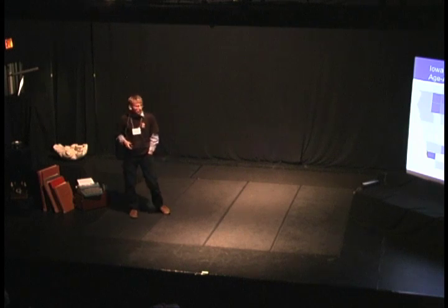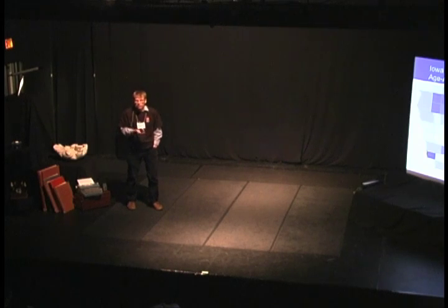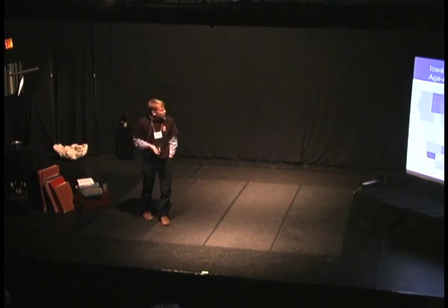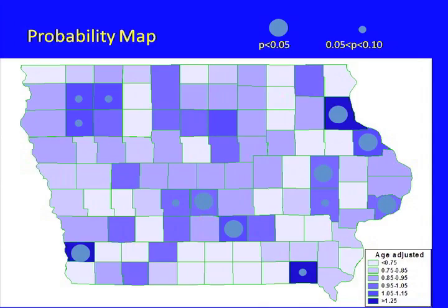Here we have breast cancer incidence in the 99 counties of Iowa. The darker blue indicates higher rates and white indicates lower rates. The question is: is there some pattern to this — are there higher risks of breast cancer in some parts of the state, or is it just a random pattern? One way to analyze this is to take each county and see if it's statistically significantly different from the rest of the map, and we find that seven of these counties have a p-value less than 0.05.